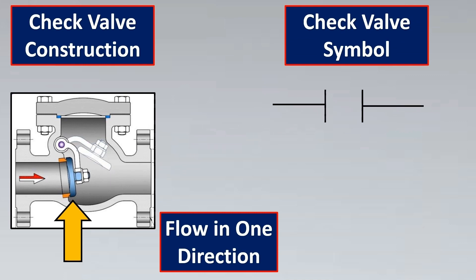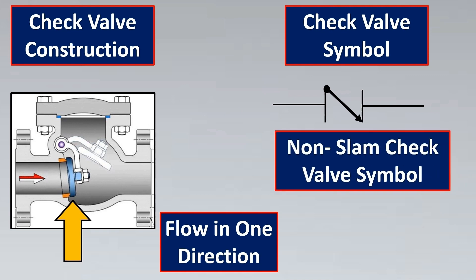For the check valve symbol, here are the two end connections, and because it allows flow only in one direction, the symbol is shown with an arrow. Do not confuse this with a butterfly symbol, which has no arrow whatsoever — in a check valve you have an arrow to show that flow is in only one direction. There is also a non-slam check valve: when flow goes in the opposite direction it can slam and create a water hammer effect, so the same check valve symbol is shown with additional lines to represent that dampening effect.